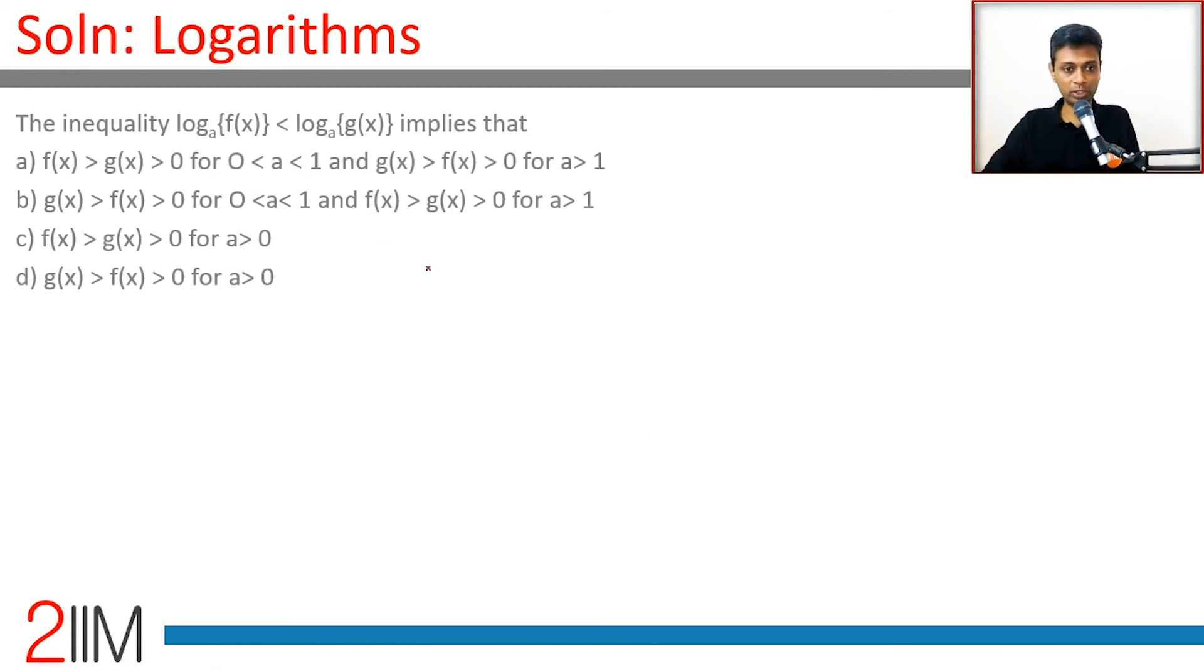This tells us quite beautifully that f(x) will be less than g(x) whenever a is greater than 1, and f(x) will be greater than g(x) when 0 < a < 1. If the base were less than 1, then the inequality would reverse. If the base were greater than 1, the inequality would behave itself. The log inequality and the variable inequality would be the same.